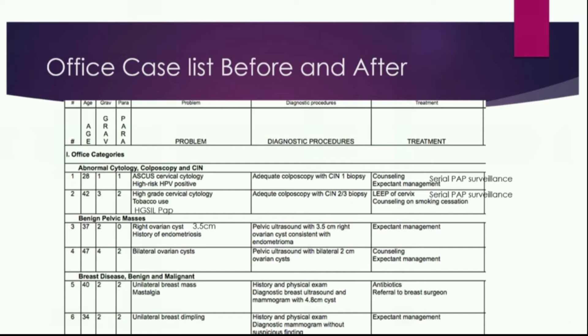In case three, it says right ovarian cyst, and on diagnostic procedures it shows a 3.5 centimeter cyst. I like to include how big the cyst was in the problem column — it makes it easier for the examiner to see. On the treatment, I added counseling on endometriosis and medical and surgical management, because it's really going to depend on the patient's fertility desires. Also, any time you have an endometrioma of a certain size, medical management may be inferior to surgical management for patients who desire fertility.